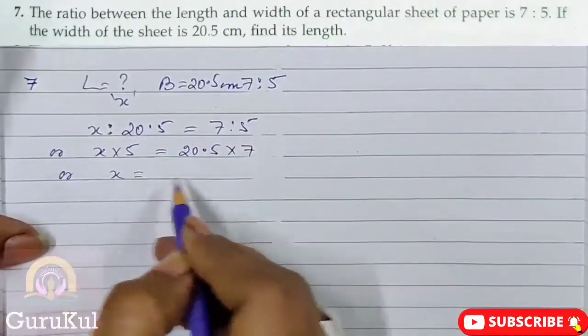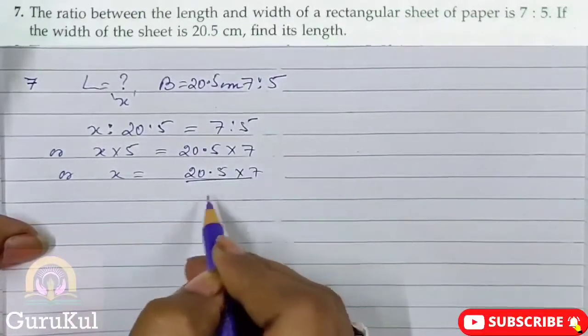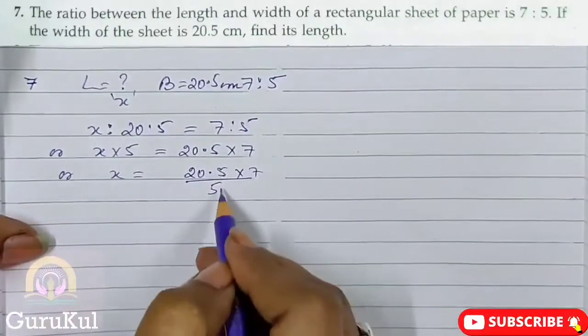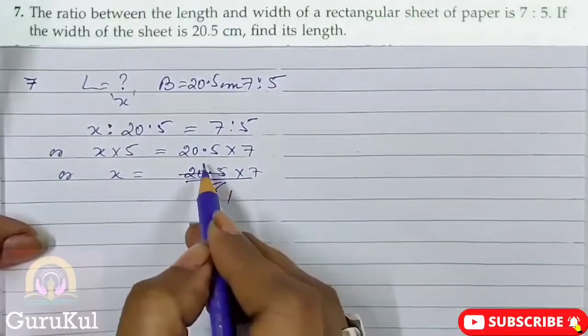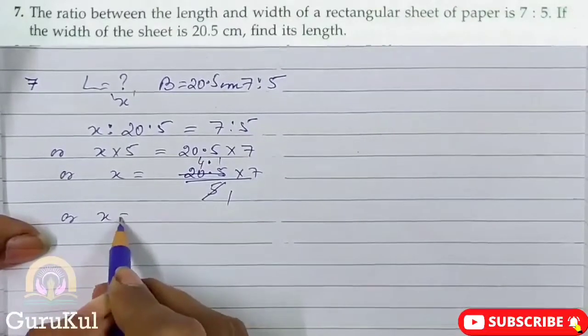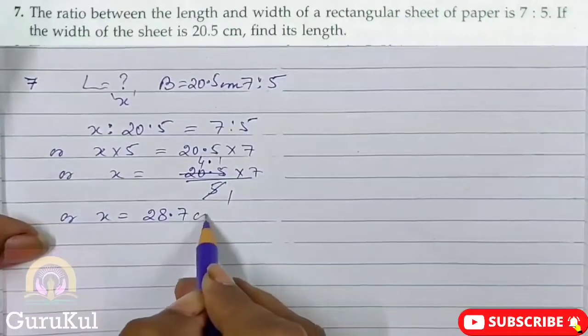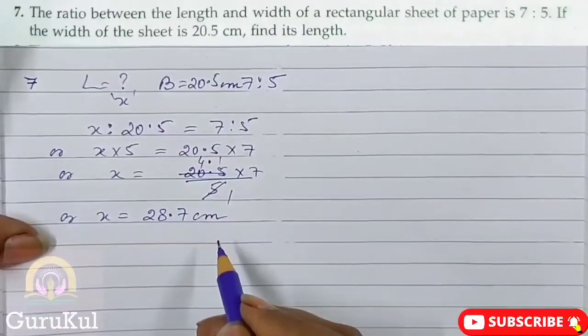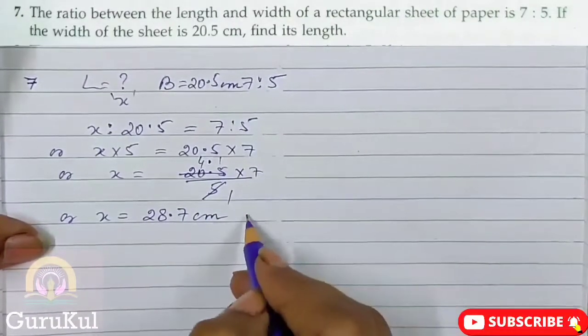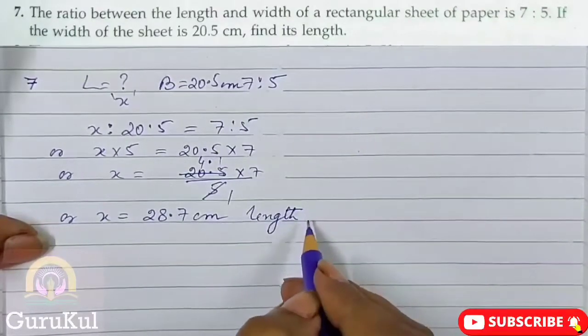Or, X is equal to 20.5 into 7 by 5. 5 ones are 5, 5 fours are 20. Or X is equal to 28.7 cm. So this is the length of the rectangular sheet.